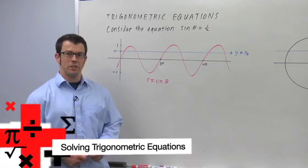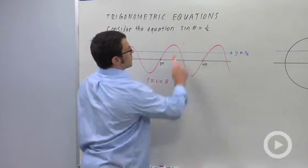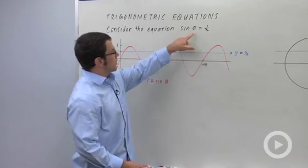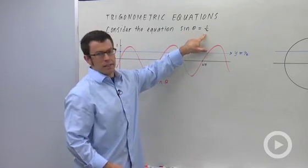I want to talk about trigonometric equations. Let's start with a really simple example. Sine of theta equals 1 half. Remember, when you're solving equations, you're trying to find the values of the variable that make the equation true. So we want to find all the angles for which the sine is 1 half.